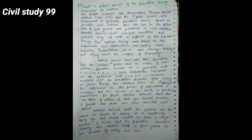Malthus' general view was that population tended to increase faster than the means of subsistence. Population increased at a geometric rate — for example 1, 2, 4, 8, 16 — while subsistence increased at an arithmetic rate, like 1, 2, 3, 4. Malthus concluded that the population doubles after every 25 years. Through this theory, Malthus tried to highlight the differences between the power of population to increase and the power of the earth to produce subsistence for people.